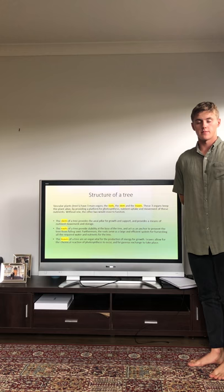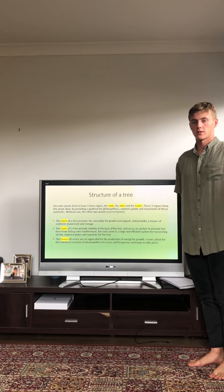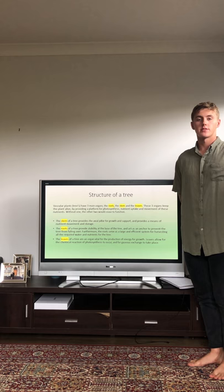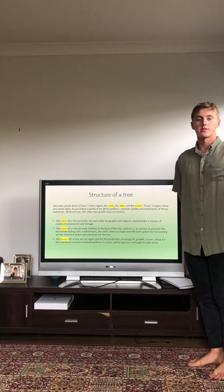So we start with the structure of a tree. The tree is a vascular plant that is comprised of three main vital organs: the leaves, the stem, and the roots. If we start with the stem of a tree, this provides the axial strength and often what delivers the height to a tree.